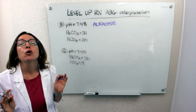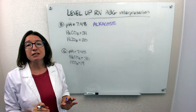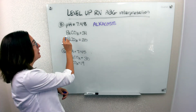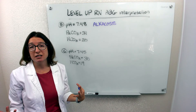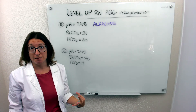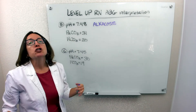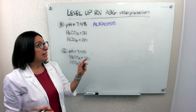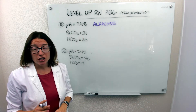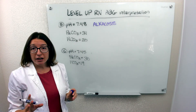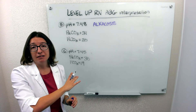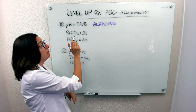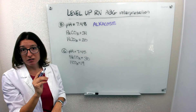Step two: is it the respiratory system or the metabolic system? Let's look at PaCO2 to see if it's the respiratory system acting up. PaCO2 should be between 35 and 45. At 31, it's out of range on the basic side, so we know right away that we have respiratory alkalosis.